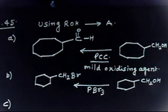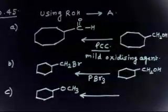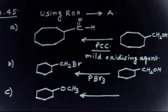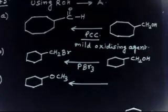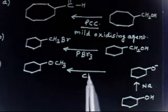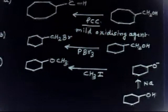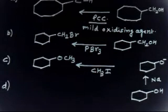For part C, you have to prepare a compound with OCH₃. How can you prepare this using alcohol? You take the alcohol and react it with sodium metal to generate the alkoxide O⁻. Once you have O⁻, you treat it with CH₃I — the alkoxide attacks and iodide leaves — so you will get the desired ether product.